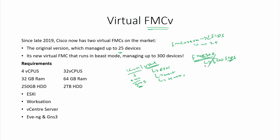For now, we are not interested in the FMC 300 — we are interested in the virtual evaluation one. For the virtual FMC evaluation mode, you need four CPUs, 32 GB of RAM, and 250 GB of hard disk. However, for this CCNP course, 8 GB of RAM should be fine — 16 GB is better, but 8 GB is good enough. For the 250 GB hard disk, if you are using EVE-NG or KVM, you don't need to worry about that.